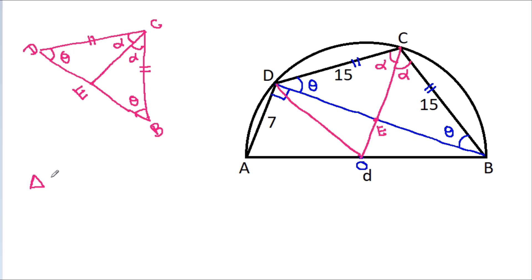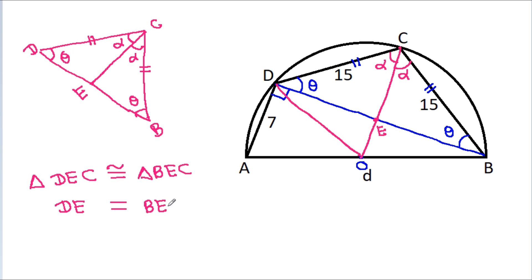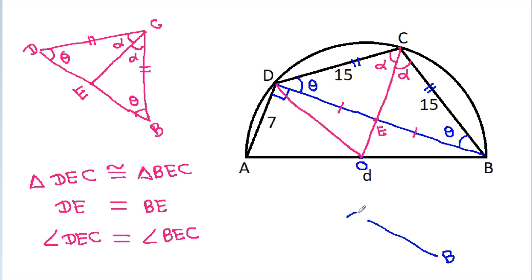Triangle DEC is congruent to triangle BEC. That means DE equals BE. Angle DEC equals angle BEC, and these two angles sum to 180 degrees, so each is 90 degrees. Since opposite angles are also 90 degrees, CE is perpendicular to DB.